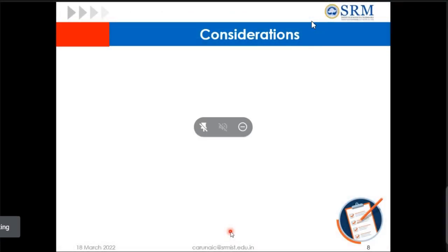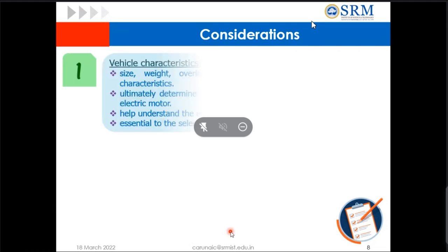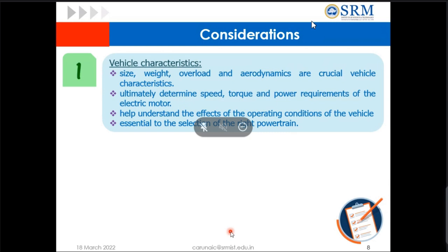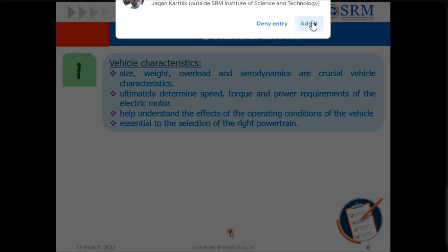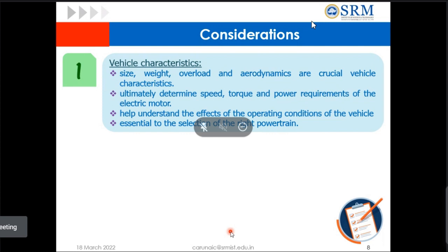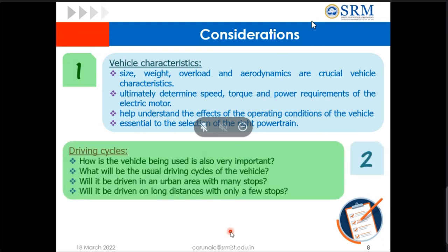Coming to the main point — what are the considerations we need to do? First, vehicle characteristics: size, weight, how much it can overload, and aerodynamics. Crucial vehicle characteristics help determine the speed, torque, and power requirement of your motor. Based on these things only you will be fixing your speed, torque, and power requirement. It also helps to understand the effect of operating conditions of the vehicle. Next, driving cycles — this is the main input to your EV, showing how you are going to drive your vehicle and in which pattern it is going to run.